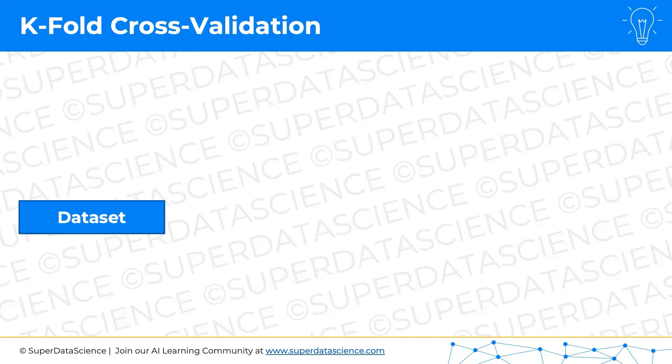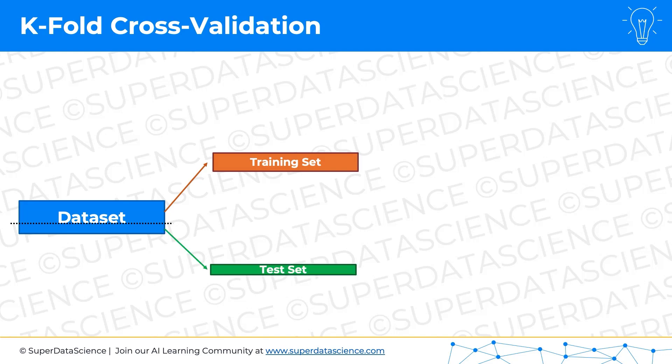Here is what we normally do. We have a dataset and we usually split it into a training set and a test set. From here we're going to talk about k-fold cross-validation, but first I wanted to make a quick note that there are two schools of thought. One school of thought is that when you're doing k-fold cross-validation, you don't need the test set.